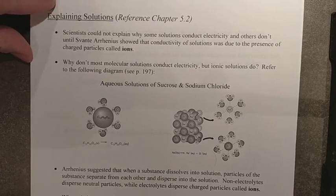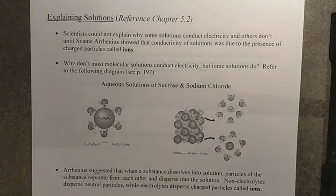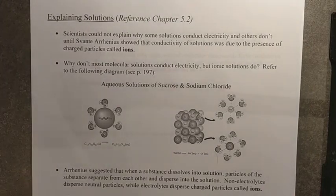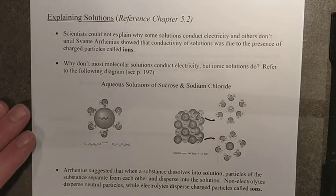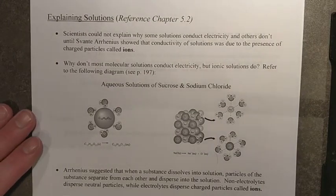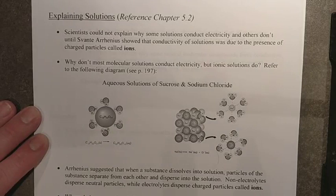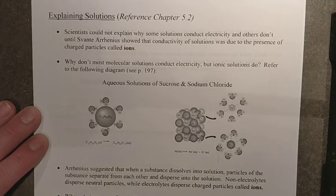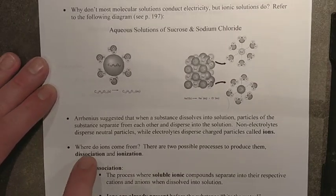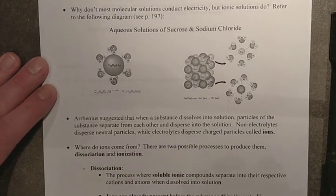So we're into our section 5.2 here. We want to be able to explain solutions. And there's two main terms that we're trying to take from this particular section here. That is going to be identifying ions and solutions. So this is your conductivity versus non-conductivity, electrolyte versus non-electrolyte. And where these ions are ultimately coming from through two processes known as dissociation or ionization.